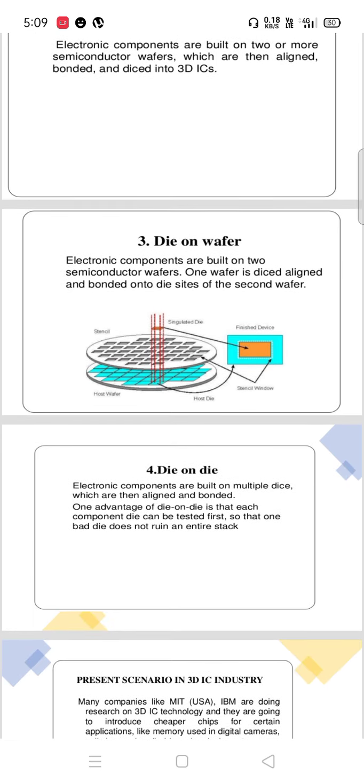Third method is die on wafer. Electronic components are built on two semiconductor wafers. One wafer is diced, aligned, and bonded onto die sides of the second wafer.